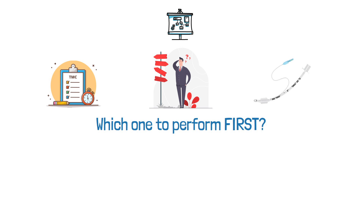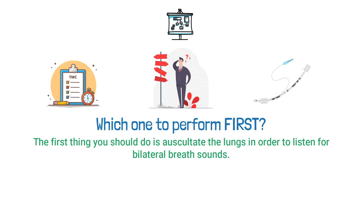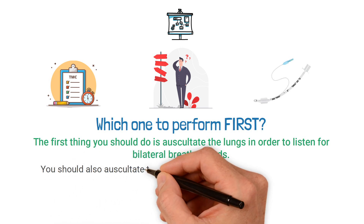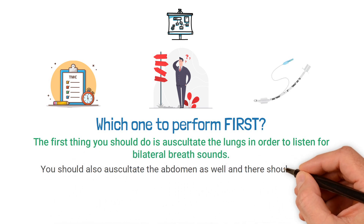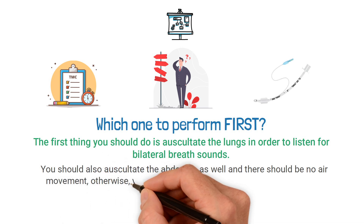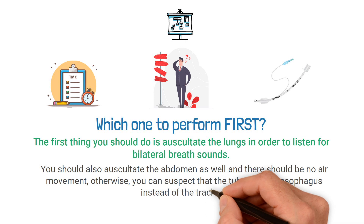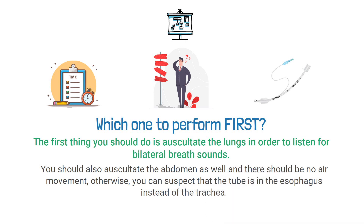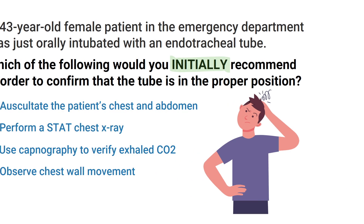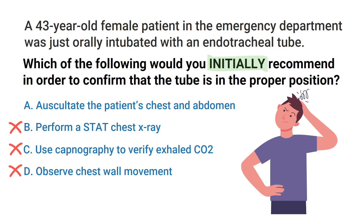So immediately after intubation, the first thing you should do is auscultate the lungs in order to listen for bilateral breath sounds. You should also auscultate the abdomen as well, and there should be no air movement — otherwise you can suspect that the tube is in the esophagus instead of the trachea.